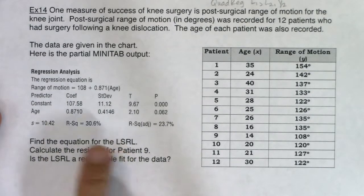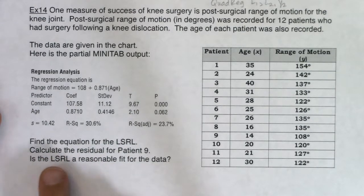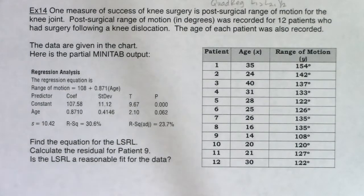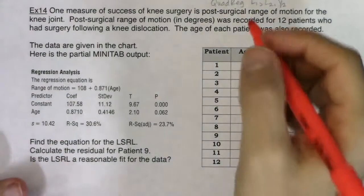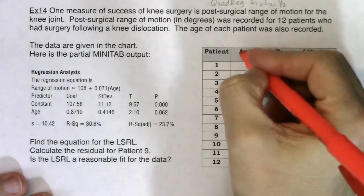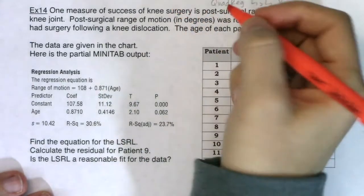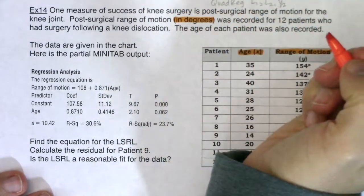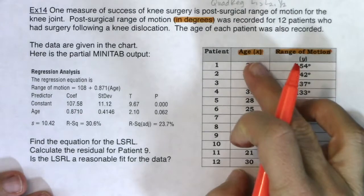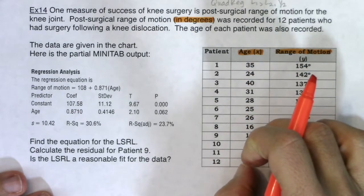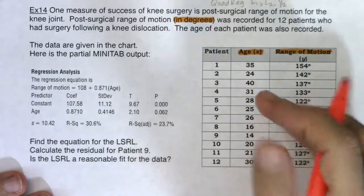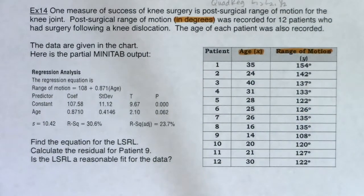And then we have our directions. Find the equation for the LSRL, calculate the residual for patient 9, and is the LSRL a reasonable fit for the data? So let's see if we can spot our two numerical variables. Here's age and here is range of motion. I'm going to assume this age is in years. When you hear degrees, think about this knee rotating 90 degrees, 110 degrees, 150 degrees, and ultimately you'd like to be able to rotate it flat at 180 degrees.